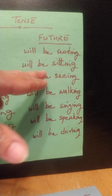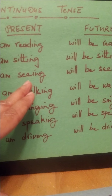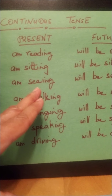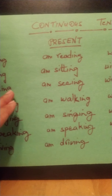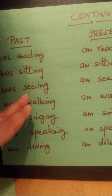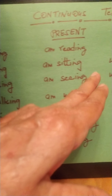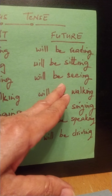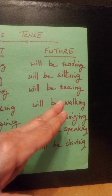So here is a whole example. I am seeing. I am seeing the bird. Past tense: I was seeing the bird. And bhavishya kaal: I will be seeing the bird.